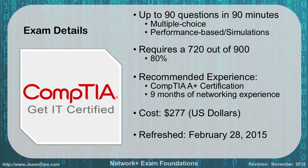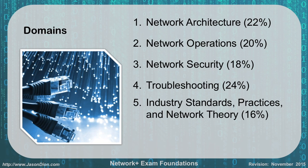The exam was re-released in February of 2015, and CompTIA usually operates on a three-year cycle, so this current 006 version will be with us for another couple of years. The domains covered are fairly evenly distributed, unlike A+. Network Architecture is 22%, Network Operations 20%, Network Security 18%, Troubleshooting 24% — the largest domain — and Industry Standards, Practices, and Network Theory makes up a smaller portion. We'll cover all of these throughout the lectures.